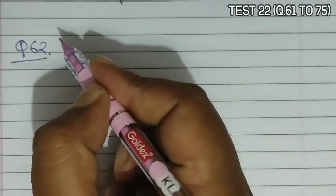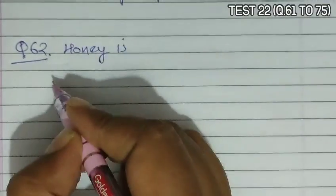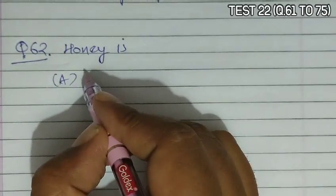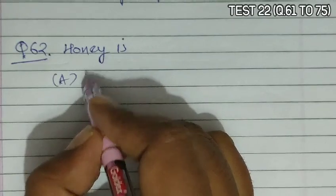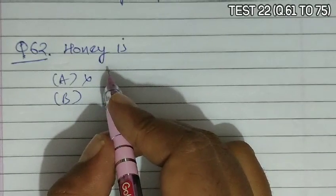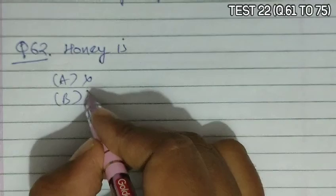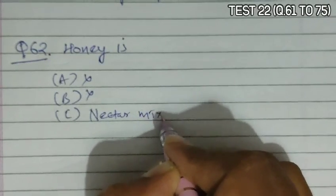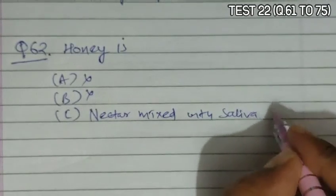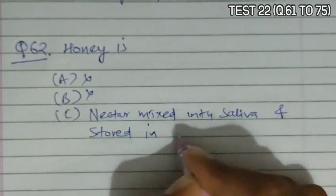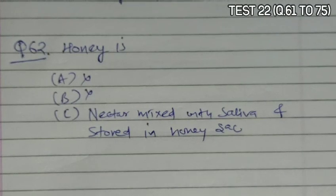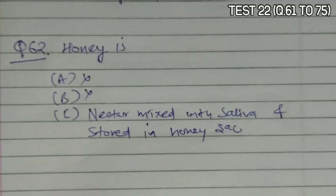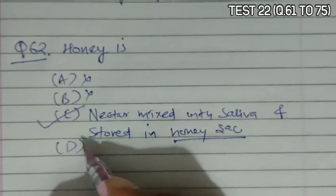Question 62 asks that honey is. Option A says it is the nectar of flower only — that is incorrect. Option B says nectar stored in honeysack — but honey is not only nectar. Option C says nectar mixed with saliva and stored in honeysack — the honeybee makes 40,000 to 80,000 trips to a flower, and during those trips the nectar of the flower is mixed with saliva and stored in the honeysack. So option C is the most appropriate answer.